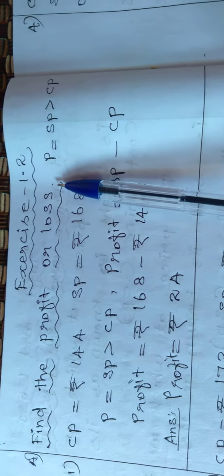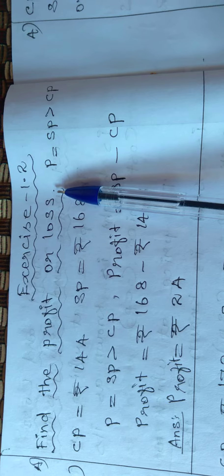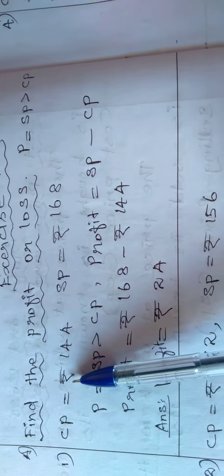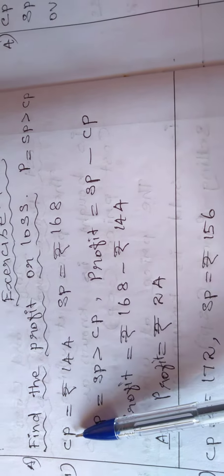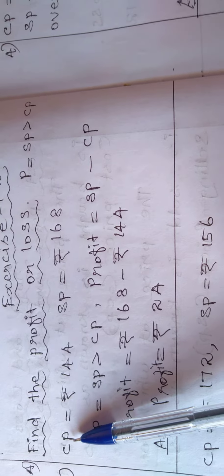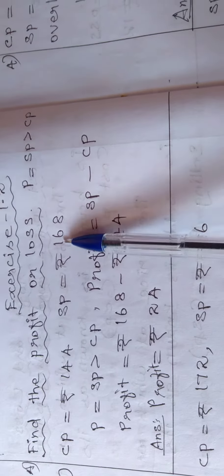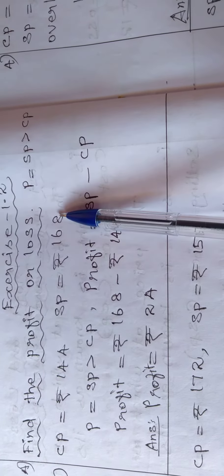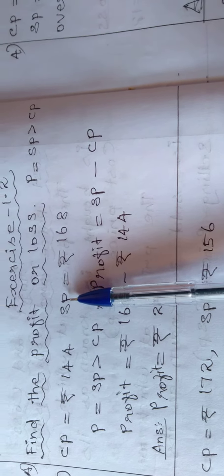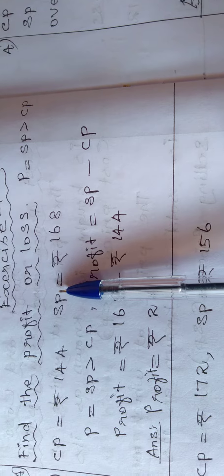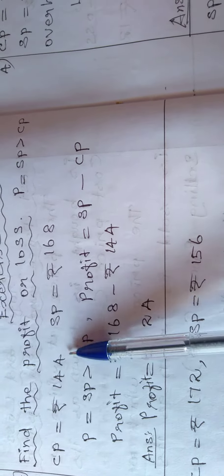Find the profit or loss. CP (cost price) is equal to rupees 144. SP (selling price) is equal to rupees 168. First we have to find out which is greater — CP or SP. CP is rupees 144.